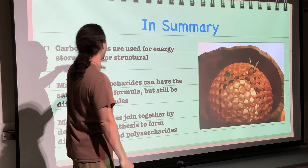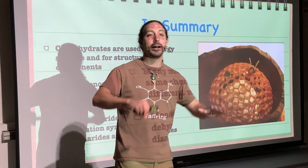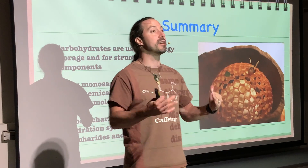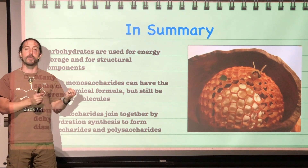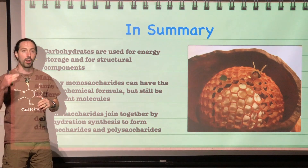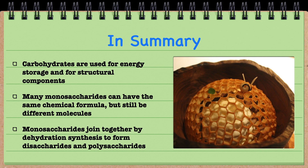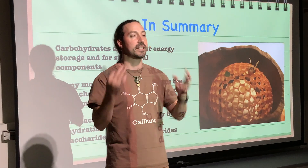In summary: carbohydrates are used for energy storage and as structural components of some cells. Many monosaccharides can have the exact same chemical formula but will interact differently because of how their elements are arranged — that is what an isomer is. And monosaccharides, just like every other biomacromolecule, come together using dehydration synthesis and break apart using hydrolysis. That's the same thing every single time.